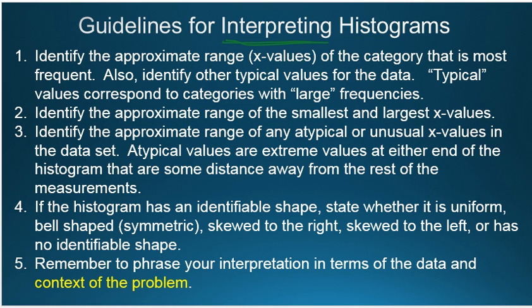First of all, five steps. The first step, identify the approximate range, essentially the x values of the category that's most frequent and other frequent categories. Step two, identify the approximate range of the smallest and largest x values in the data set.